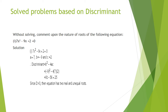Without solving for x, we have to check the nature of the roots for the equation 7x² minus 9x + 2 = 0. Taking the values: a = 7, b = minus 9, c = 2. Now finding the discriminant: D = b² minus 4ac = (minus 9)² minus 4×7×2, which simplifies to 25. Since 25 is a positive value, D is greater than 0, hence the equation has two real and unequal roots.